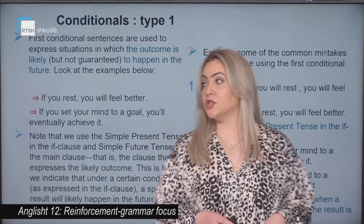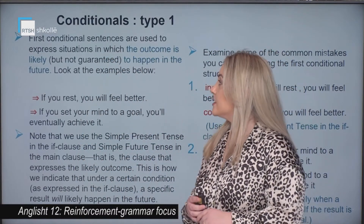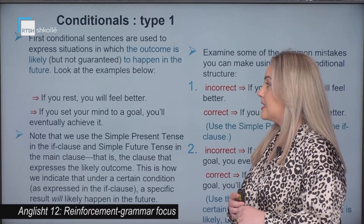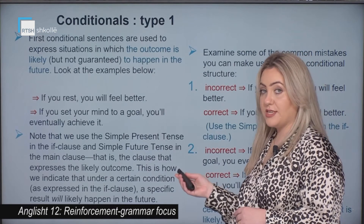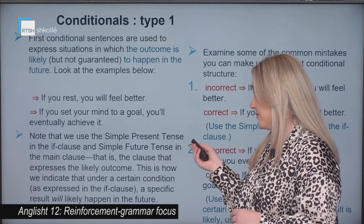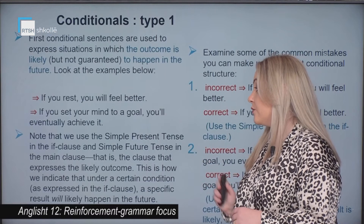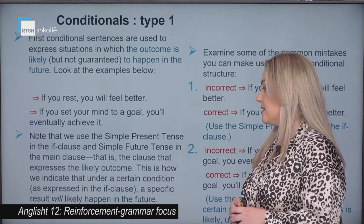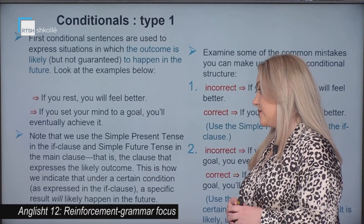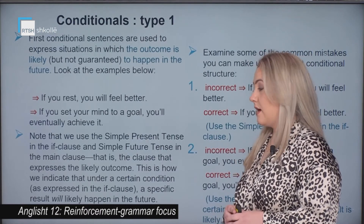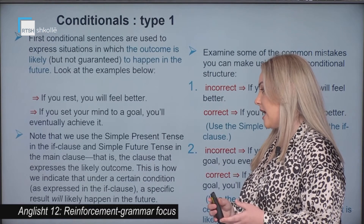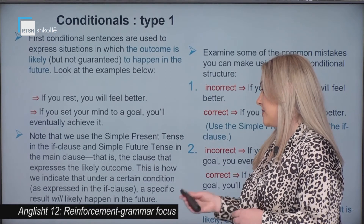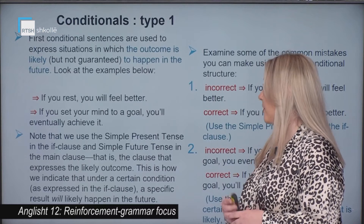Type one of the conditionals. First conditional sentences are used to express situations in which the outcome is likely to happen in the future. For example, if you rest, you will feel better. Note that we use the simple present tense in the if clause and simple future tense in the main clause — the clause that expresses the likely outcome. This indicates that under a certain condition, a specific result will likely happen in the future.